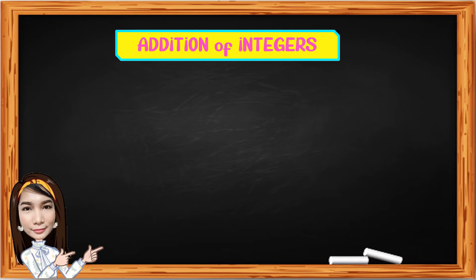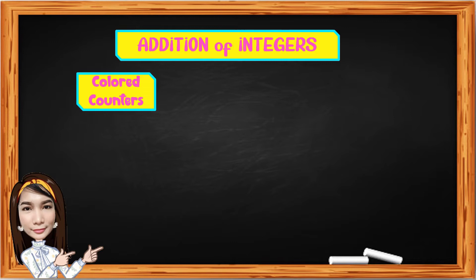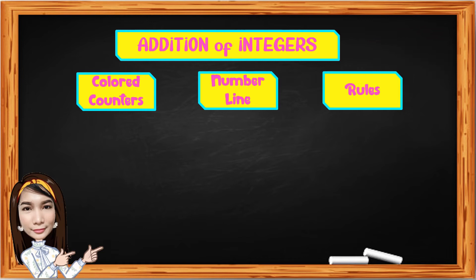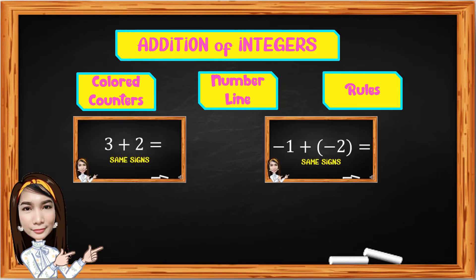Now, in addition of integers, we can use different ways. The first one is colored counters. The second one is number lines. The third is the rules for adding integers. As you noticed, the first two given are having the same sign, also called like signs.